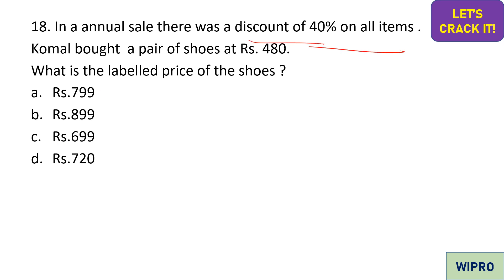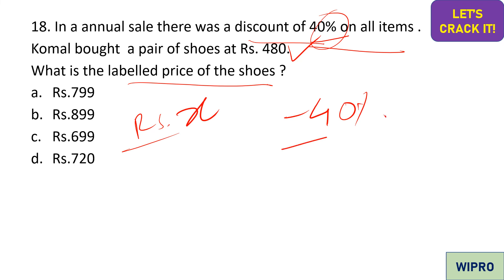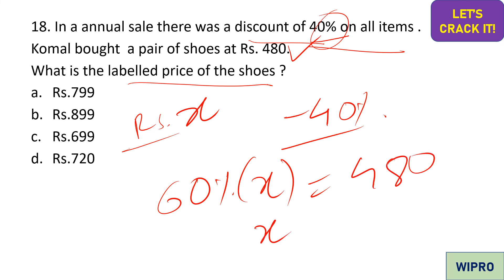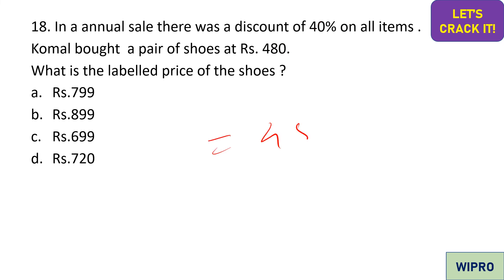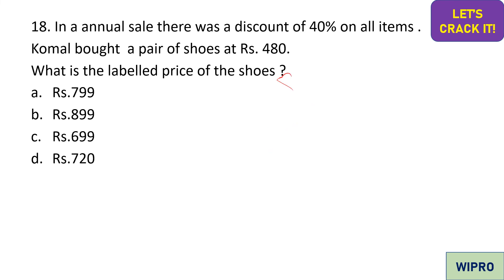An aptitude question on discounts: in an annual sale with a 40% discount, Komal bought shoes for Rs. 480. What is the label price? Let the label price be x. After a 40% discount, 60% of x equals 480. So x = 480 / 0.6 = 800. The label price is Rs. 800, option A.